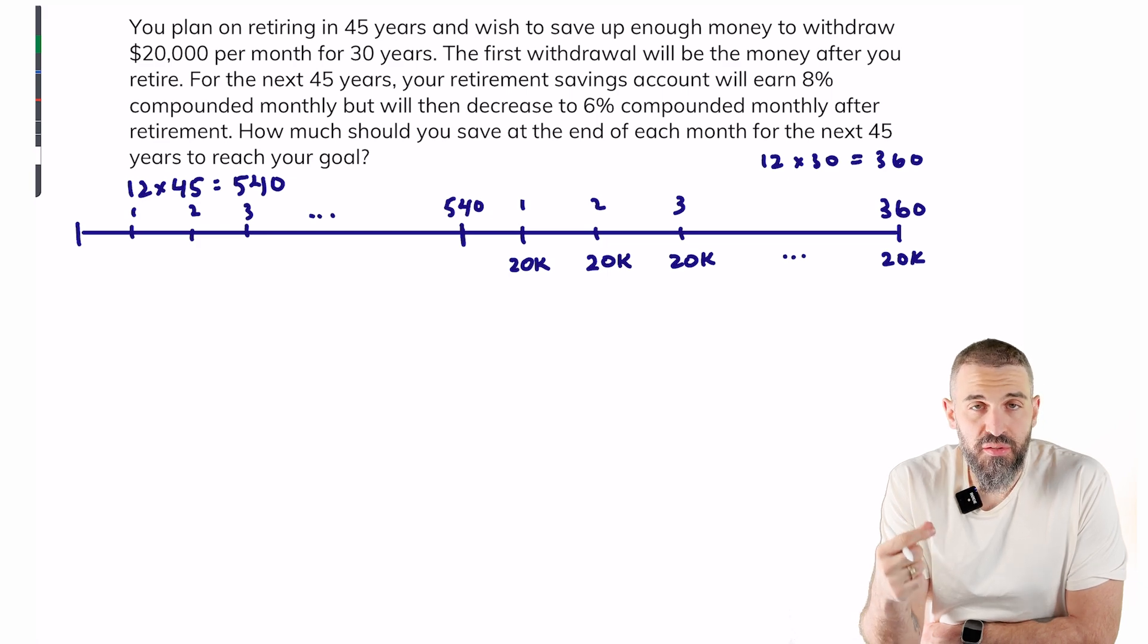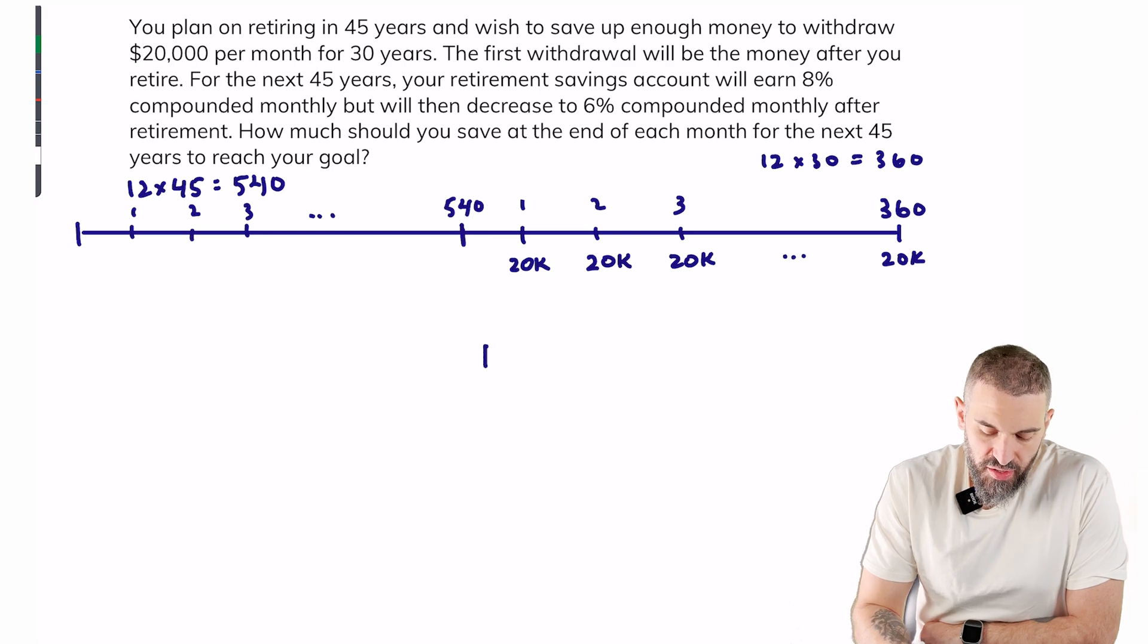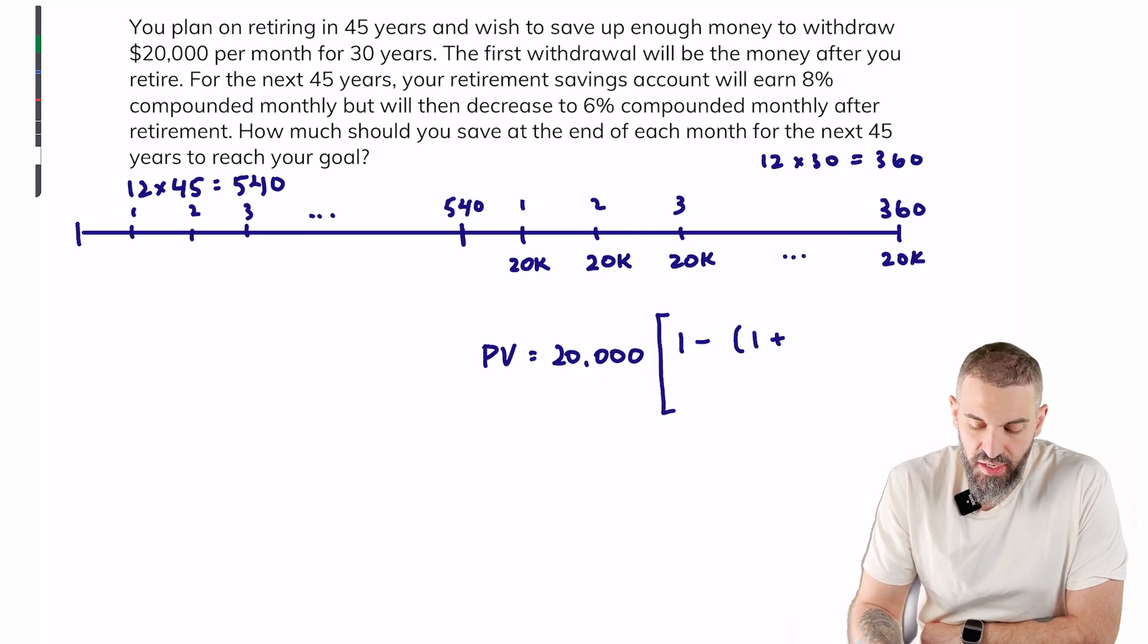We know that we want to have $20,000 every month for 30 years. That's an ordinary annuity, so I'm going to solve the present value of the ordinary annuity by taking my payment, $20,000, multiplying it by 1 minus (1 plus my rate).